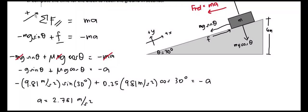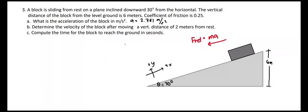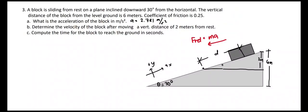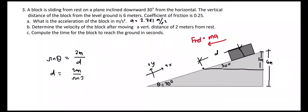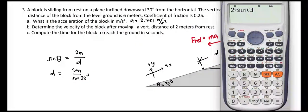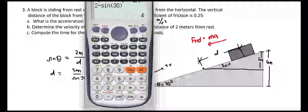For the second problem, to compute the velocity of the block after moving a vertical distance of 2 meters from rest, we first need to compute the inclined distance the block travels starting from rest. Let's call this distance d, where the angle is 30 degrees. Using the sine function: sine of 30° equals the opposite side of 2 meters divided by the hypotenuse d, so d equals 2 meters divided by sine of 30 degrees, which equals 4 meters.